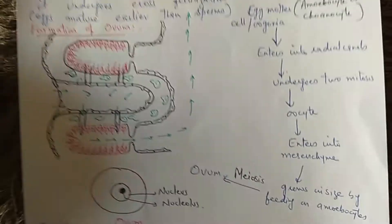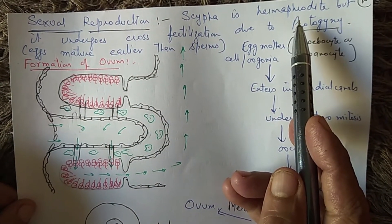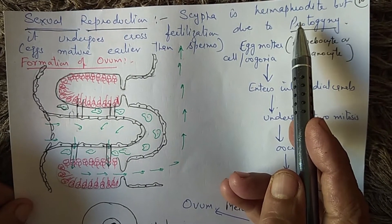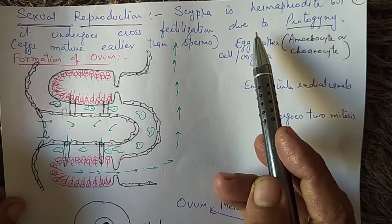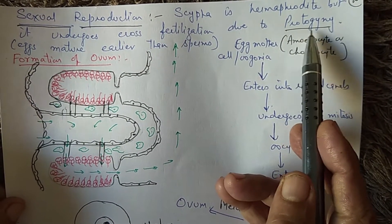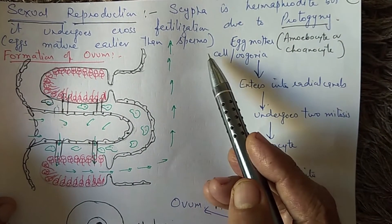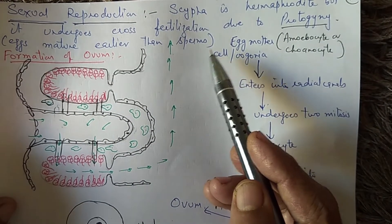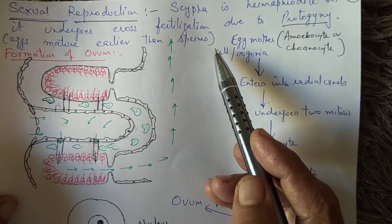Then comes sexual reproduction. Scypha is hermaphrodite, meaning a single organism produces both sperms and eggs, but it undergoes cross-fertilization. The reason is that eggs mature earlier than sperms. This condition is known as protogyny. As the eggs mature earlier than sperms, gametes of two different individuals fuse. Hence, it undergoes cross-fertilization.